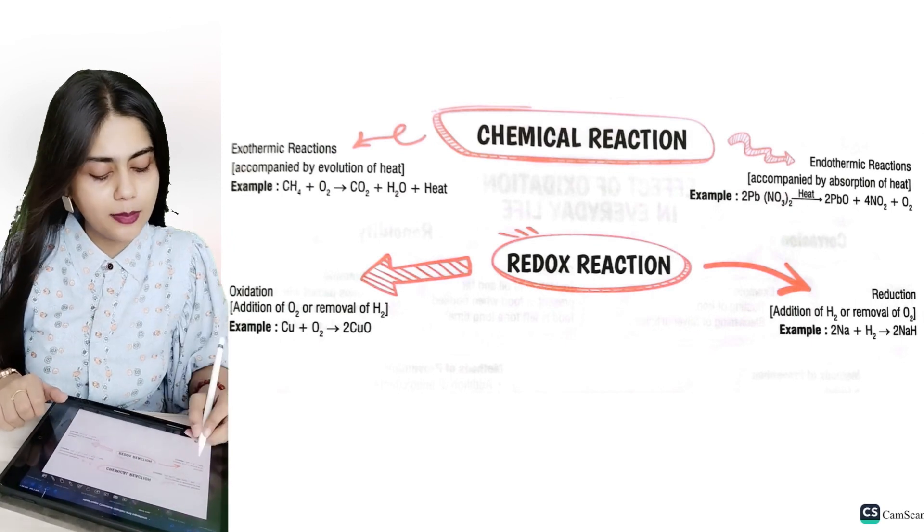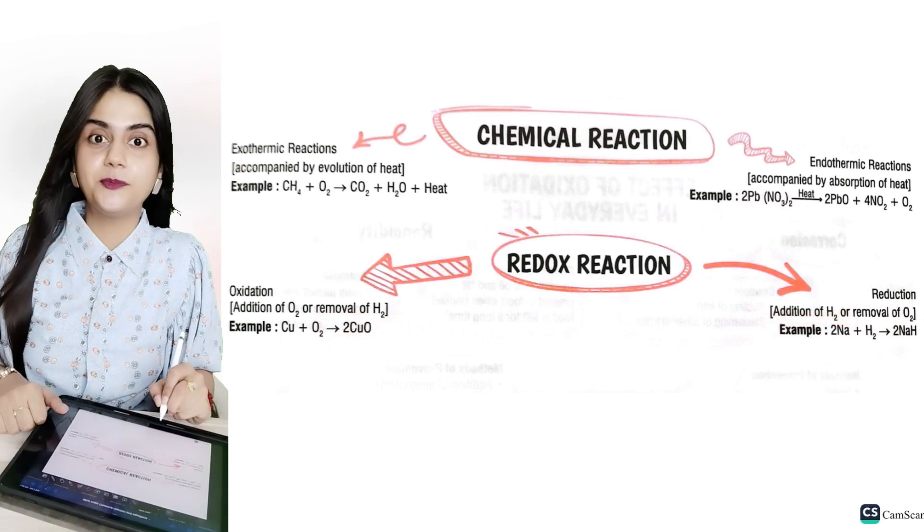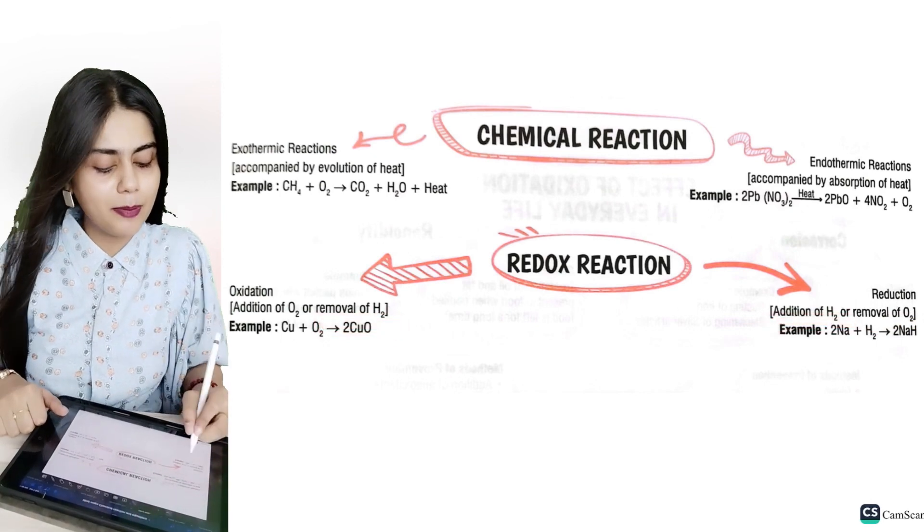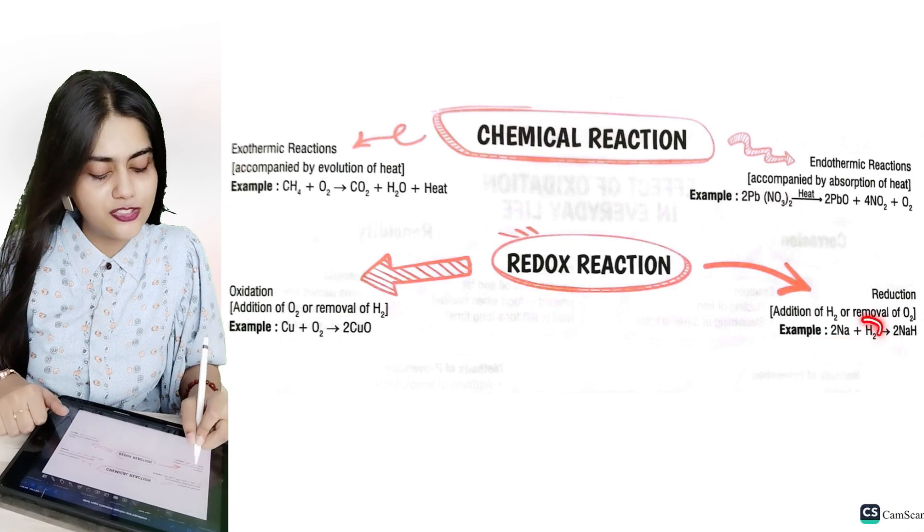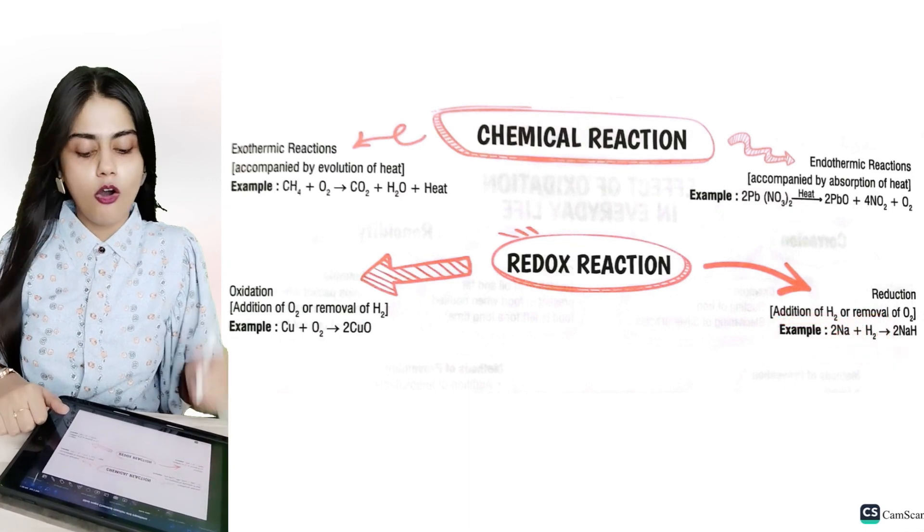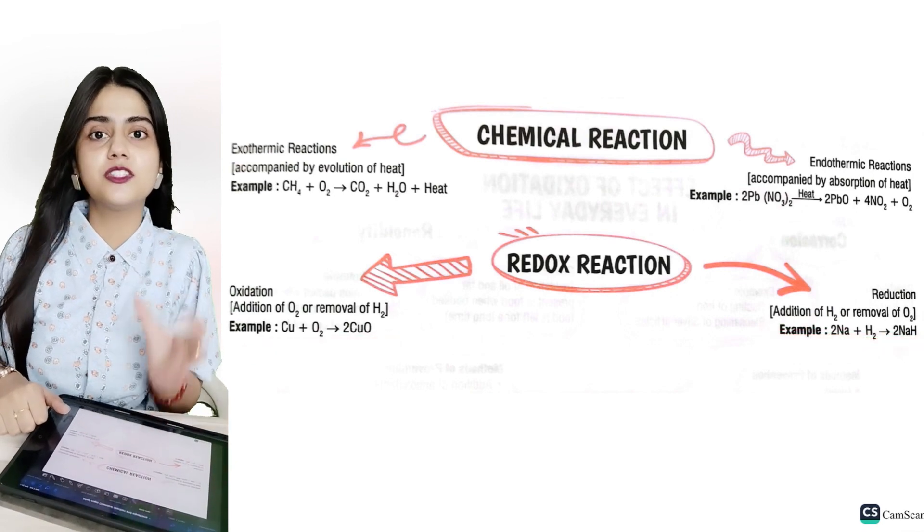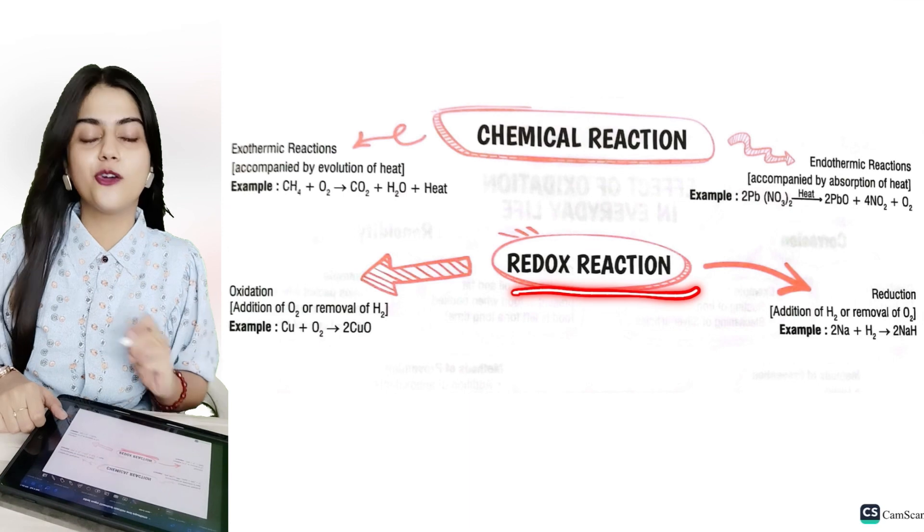When we say reduction, there is removal of oxygen or addition of hydrogen. Let's see. 2Na plus H2, here we have to add hydrogen, and 2NaH. And when these two reactions are being made in one place, then we say redox reactions.